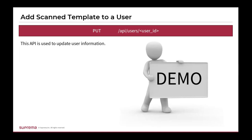Now that we have successfully scanned our face on a Suprema device and obtained the template values, let's move on to the next step. The next step is to add the scan template data to a user so it can be used as that user's credentials. We are going to use the following API, which is used to update a user's information. There are many body parameters you can add depending on what user information you want to edit. Let me pull up Postman to better explain this step.